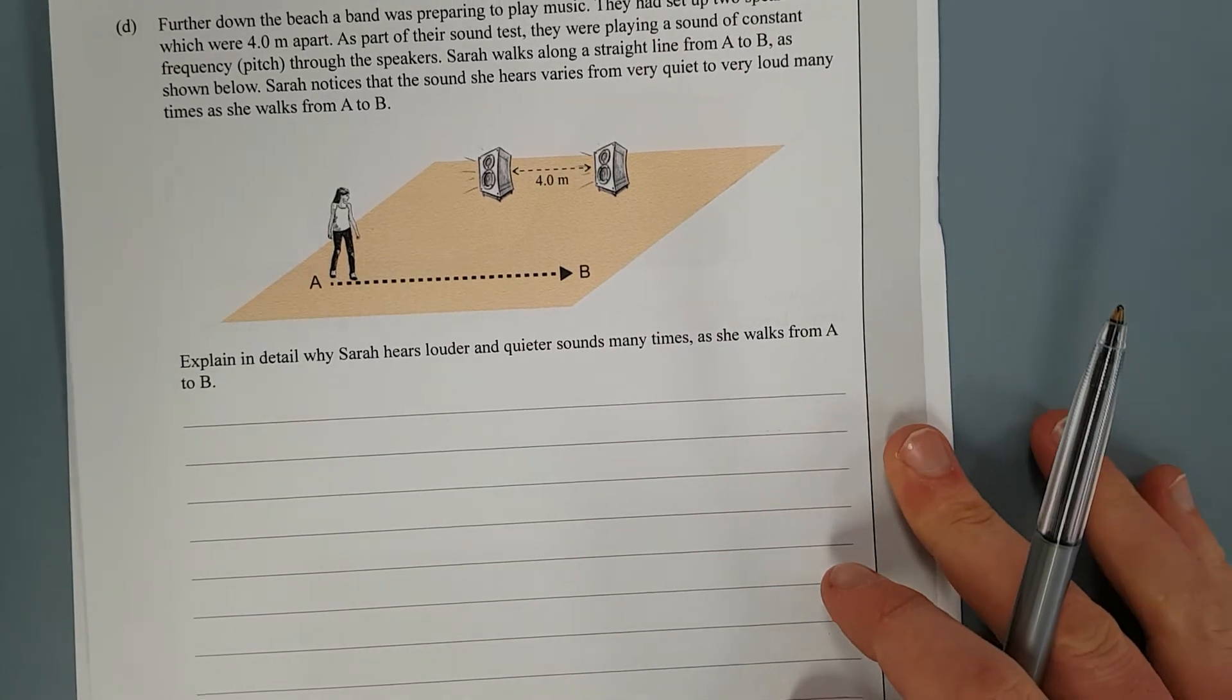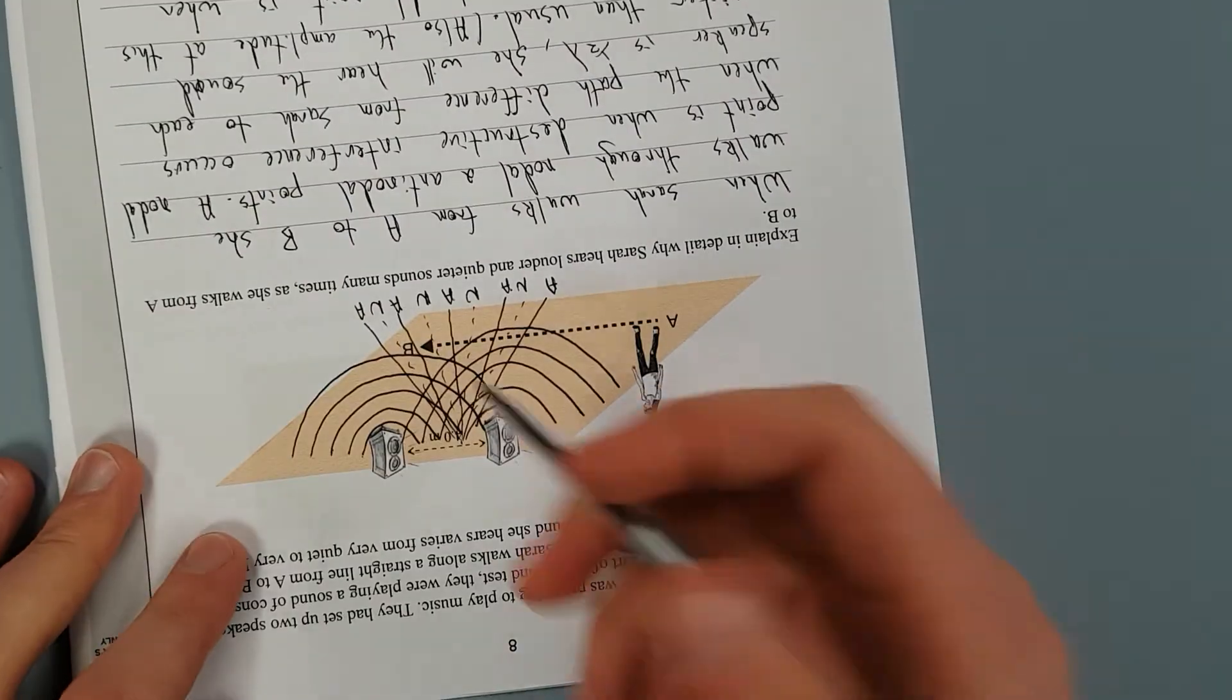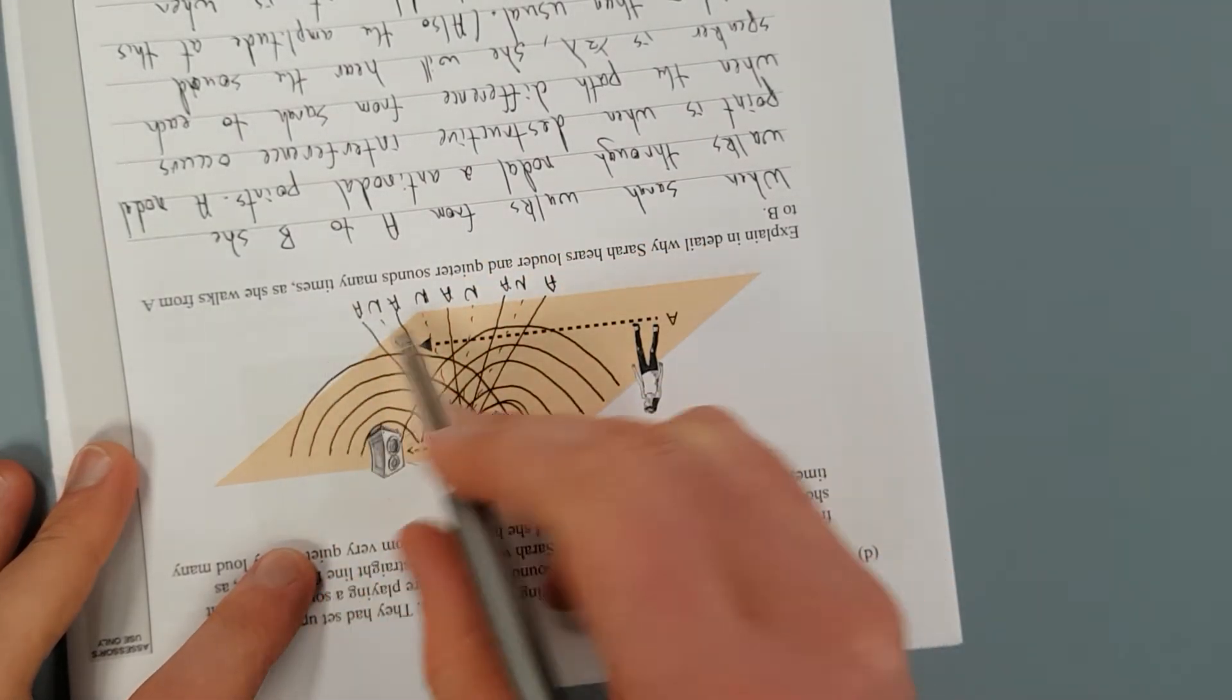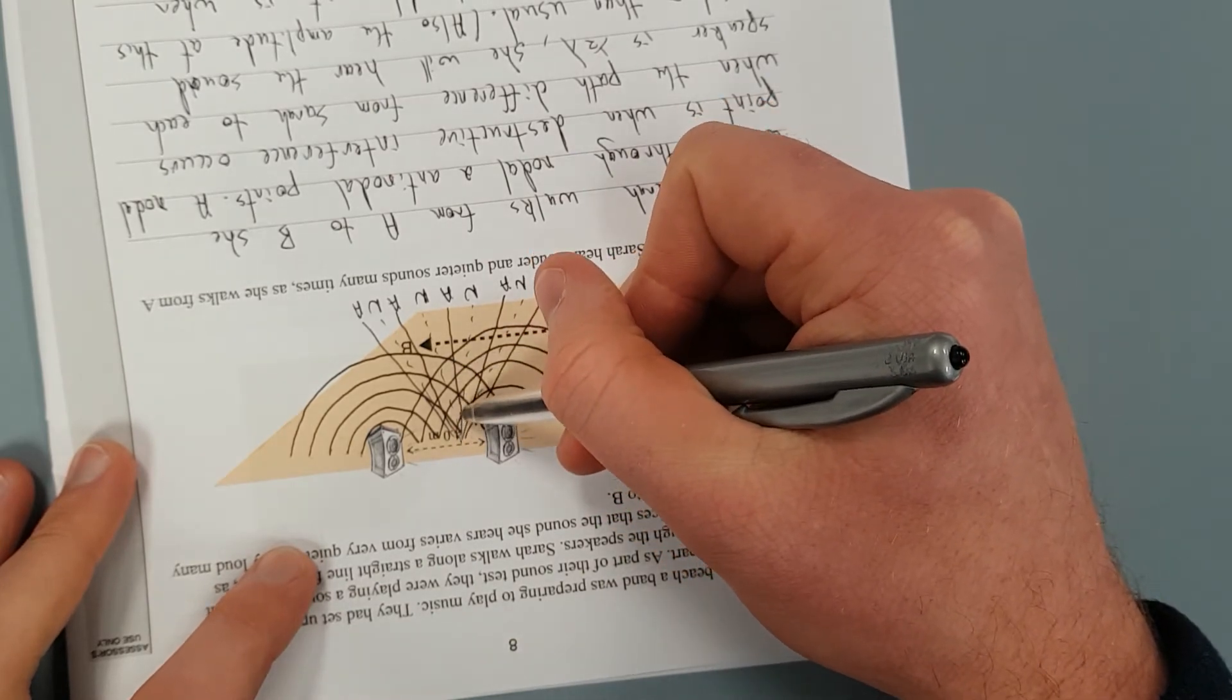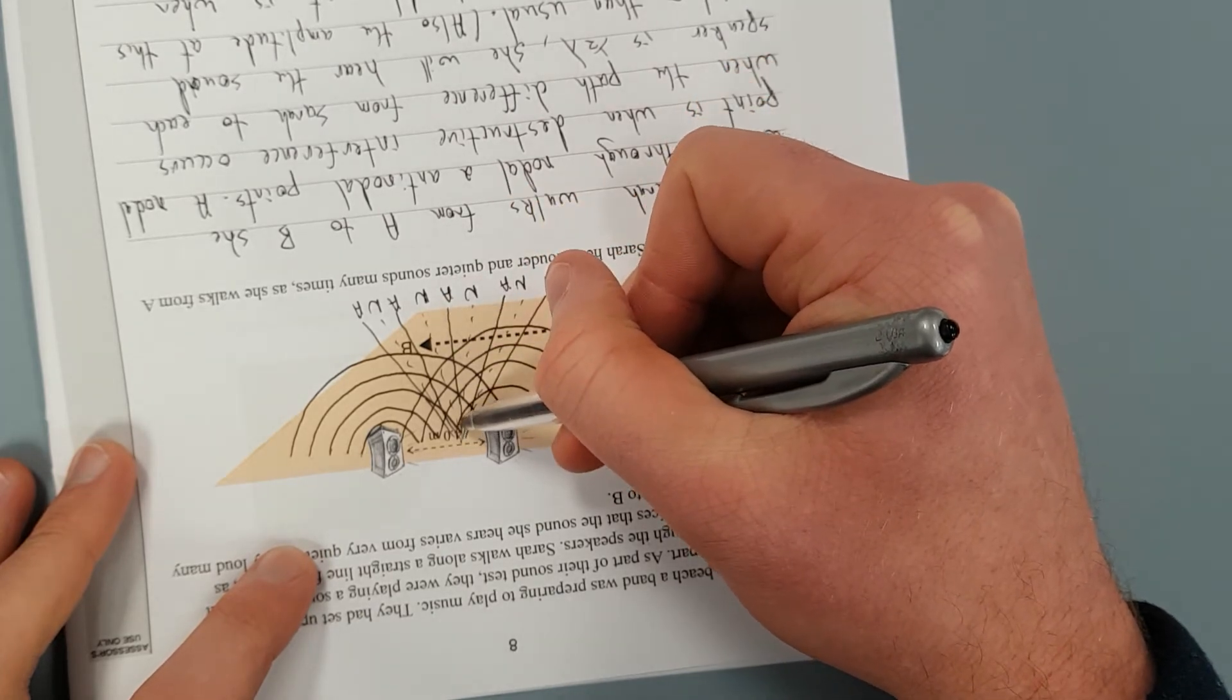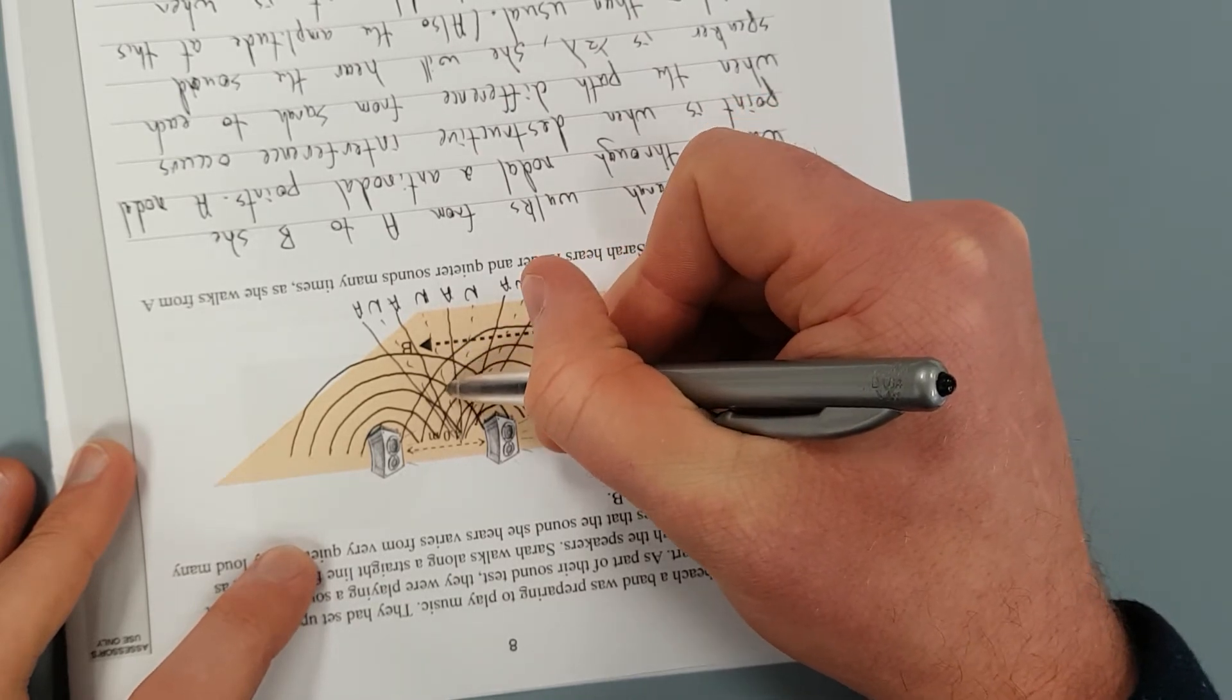Explain in detail why Sarah hears louder and quieter sounds many times as she walks from A to B. I'm going to pause the video, write the answer, and we'll go through it. First and foremost, what I did is I flipped my sheet upside down and I drew the waves propagating out. So I drew my waves propagating out from both speakers and then I drew a line directly between them. Not the best artist, but it's meant to be the anti-nodal line. That's the line with all the waves. You'll see that wave crest right there combines. Wave crest right there combines.